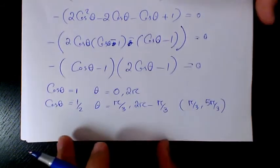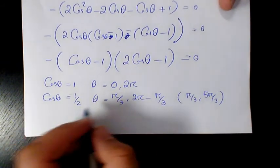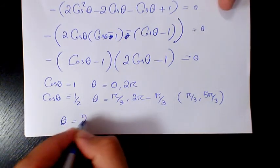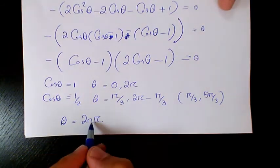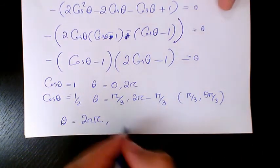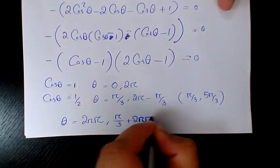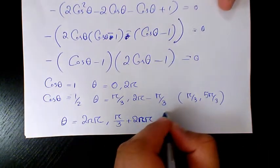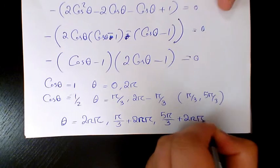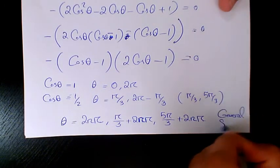If you want to find the general solution, it's going to be: 2n pi, pi over 3 plus 2n pi, and 5 pi over 3 plus 2n pi, where n can be any integer. These are the general solutions.